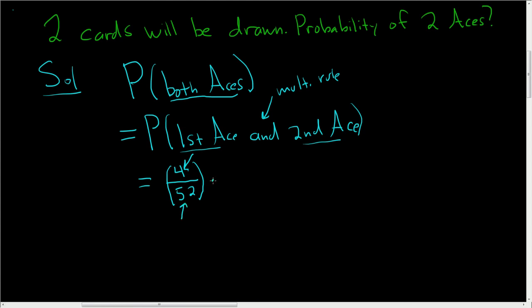Times, now we've taken an ace out of the deck, so there are three ways to pick an ace and 51 ways to pick a card. Right, because we lost a card, which happened to be an ace. That's why we have a 3 here, and here we have a 51 because we did lose a card. This is equal to 0.0045.